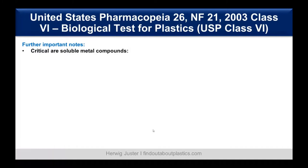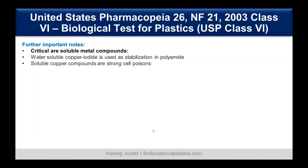Other important notes: critical soluble substances such as metal compounds — for example, the water-soluble copper iodide used in heat stabilization for polyamides — are strong cell poisons and need to be avoided. In material selection, if you aim to use a polyamide, you have to check whether the heat stabilizer is copper iodide based or not.